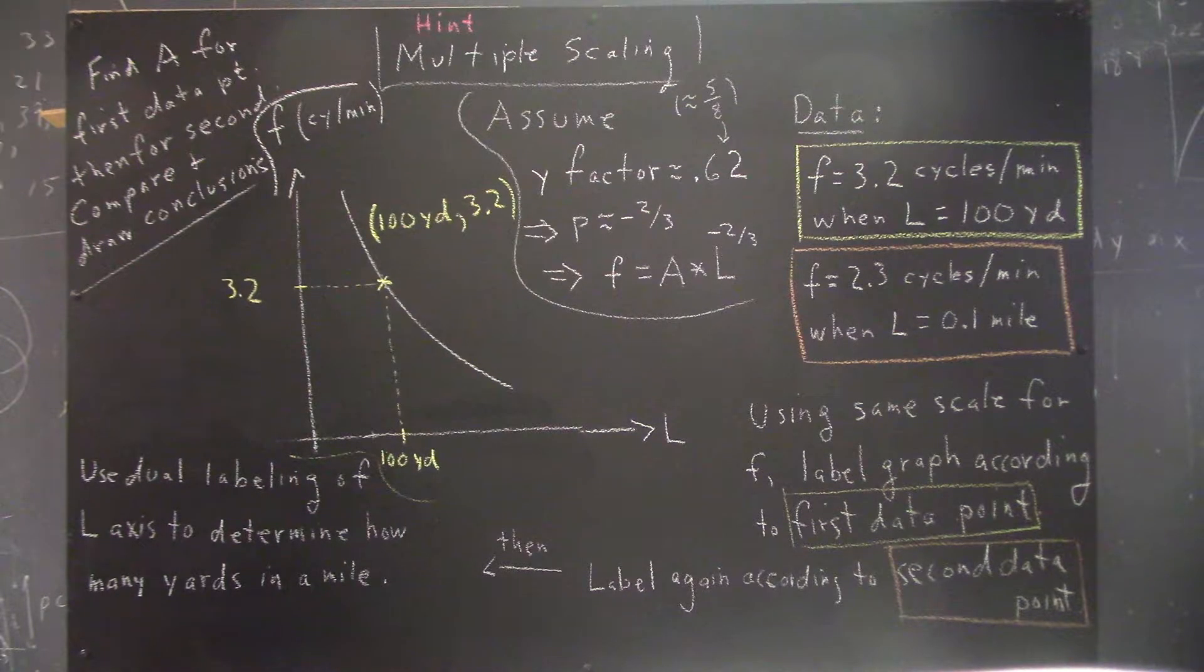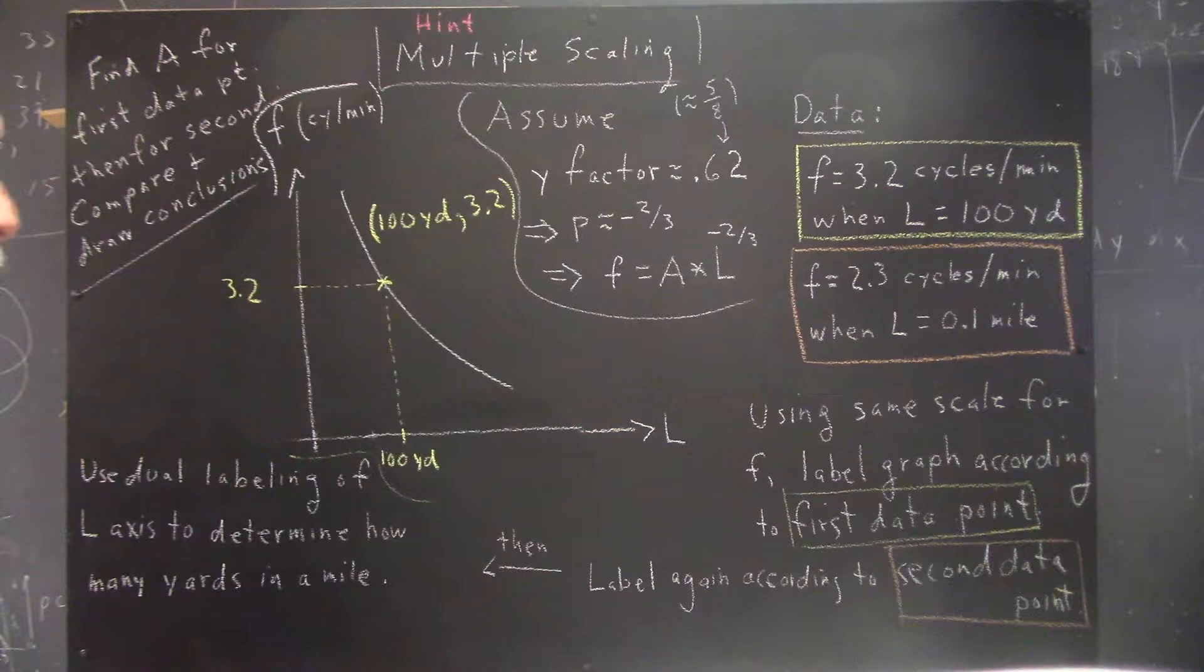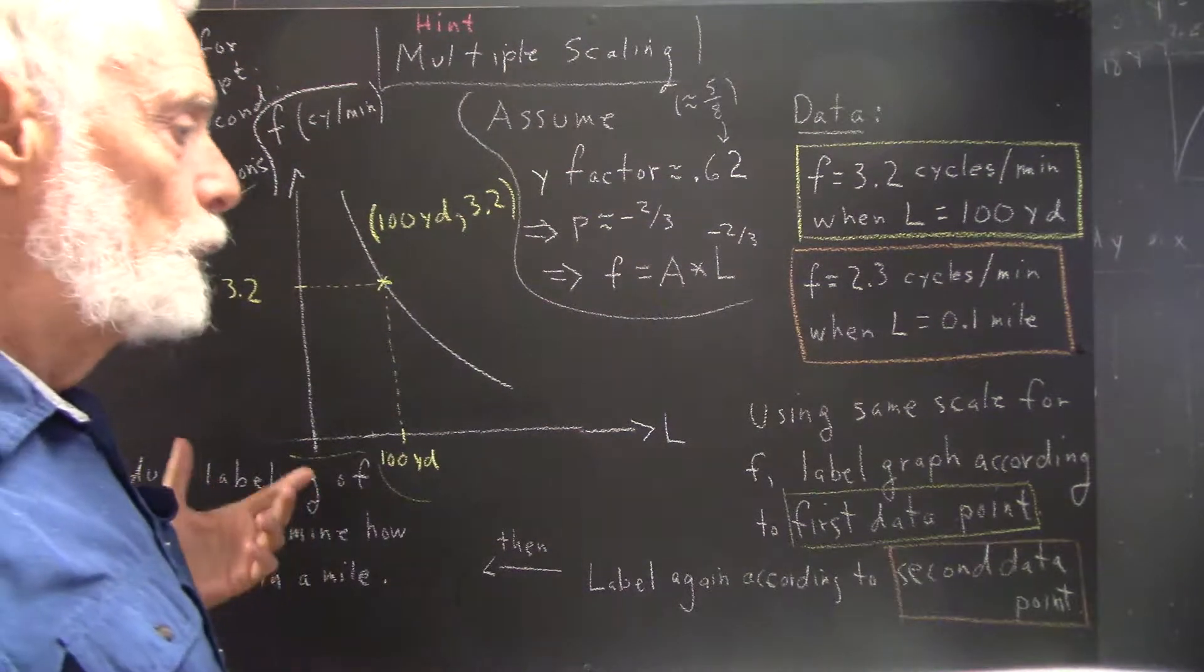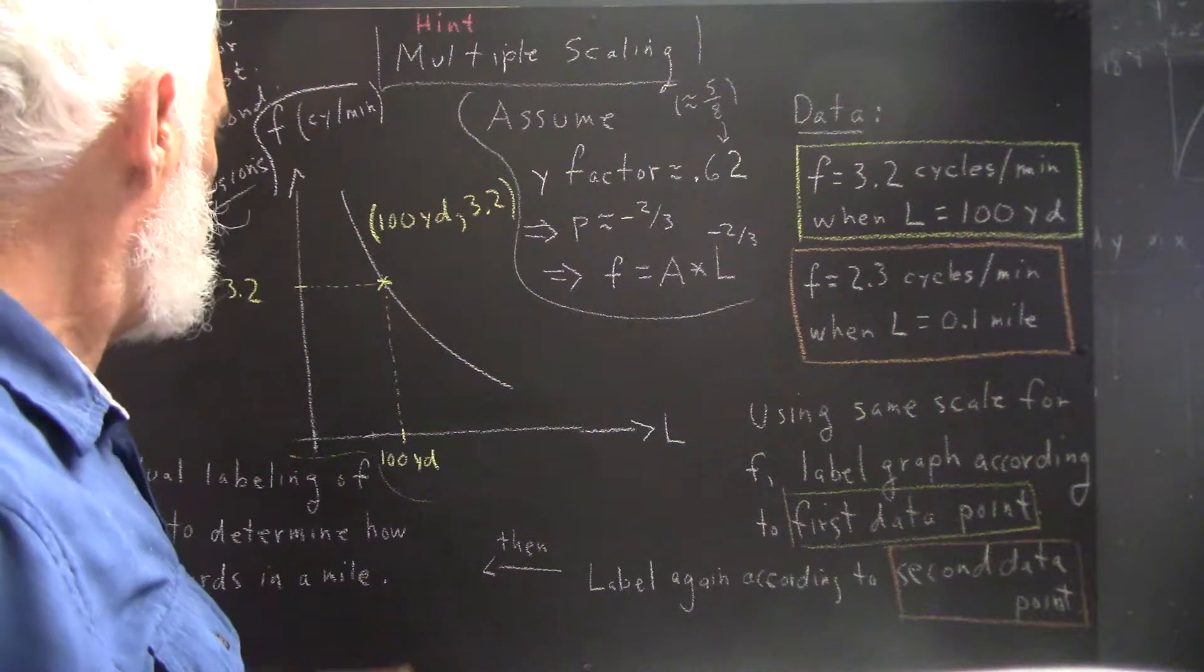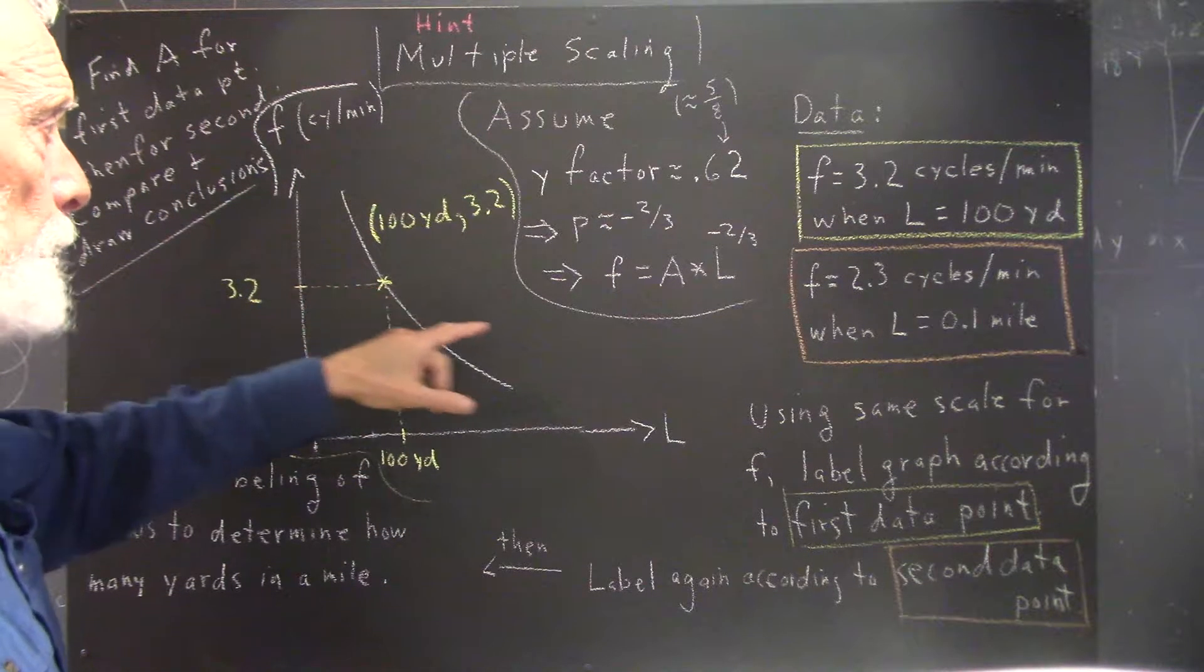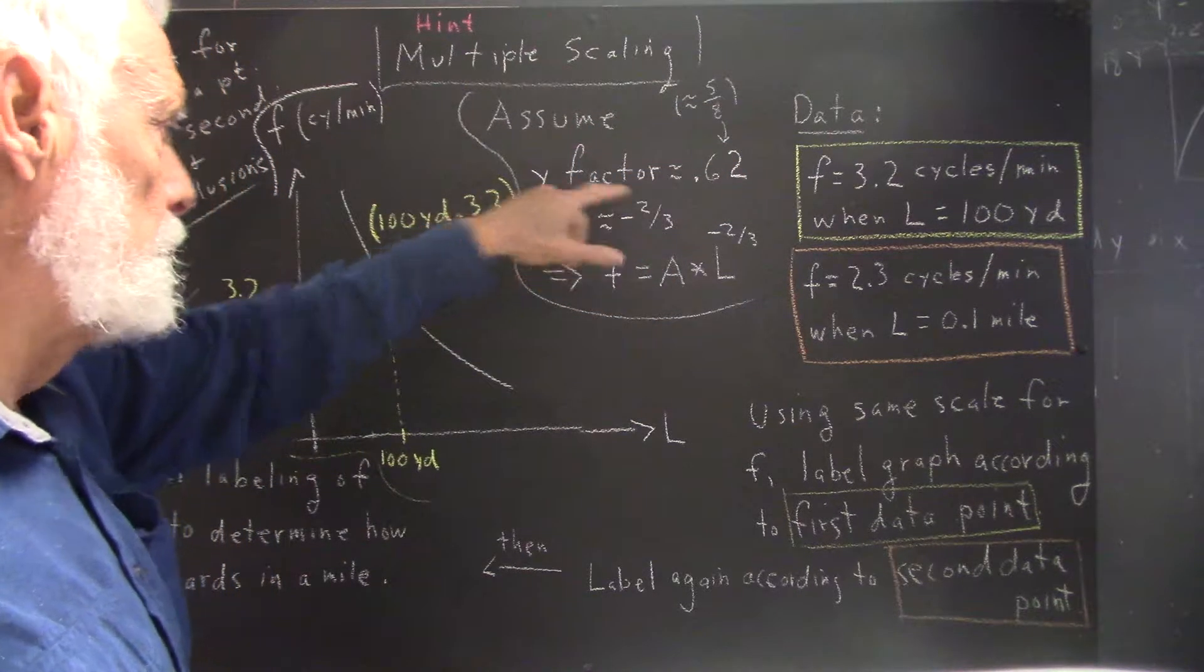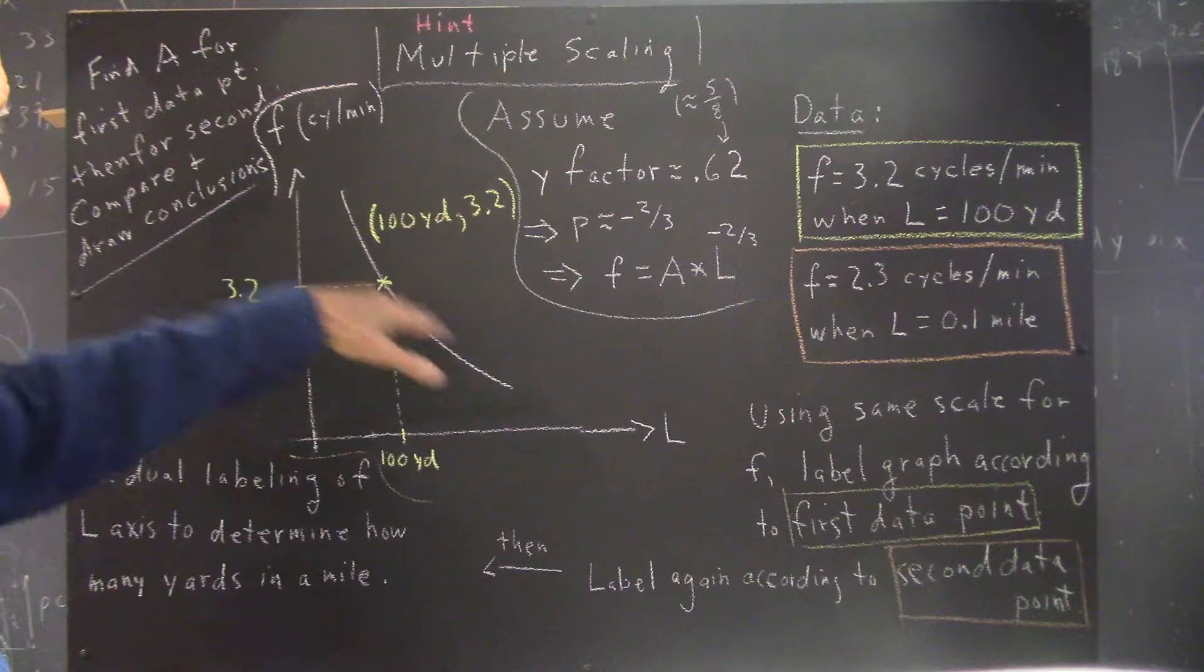Here, 3.2 here. What about our second data point? Well, we want to do the same thing with that data point, but we can't just pick any point on the graph. We could pick any point on the graph here, this being p equals negative 2, our factor 0.62 p equals negative 2 thirds power function graph.